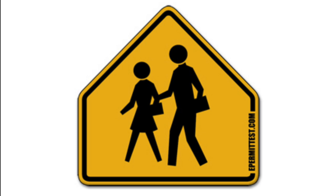School zone. A five-sided sign in black on yellow is used only to warn of schools and school crossings. Slow down — school zones have a speed limit you must observe. Watch out for children crossing the street or playing. Be ready to stop and obey signals from any crossing guards. New fluorescent yellow-green signs may also be used.